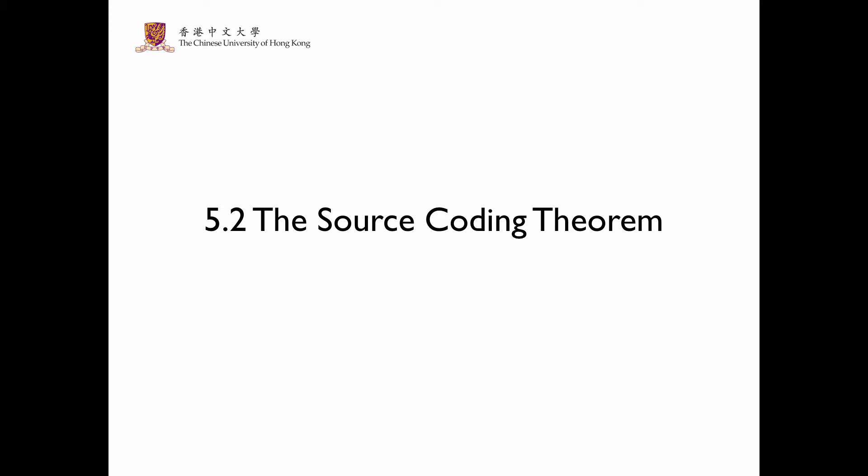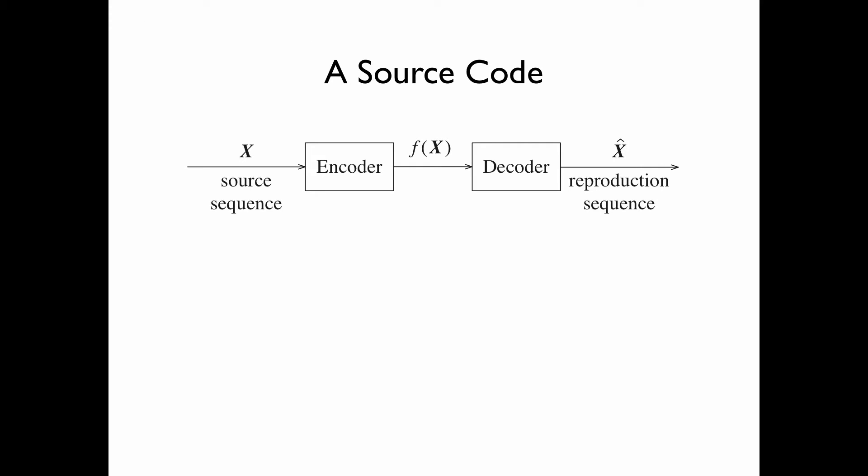In section 5.2, we discuss the source coding theorem. We first consider a source code, which consists of a source sequence x, an encoder, and a decoder.